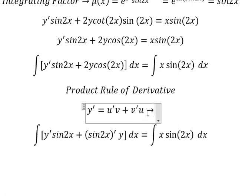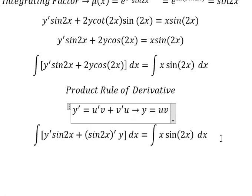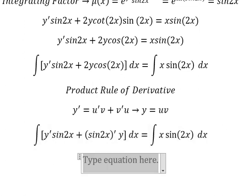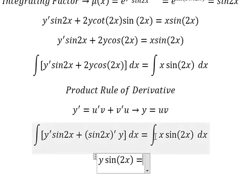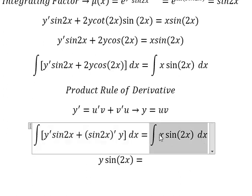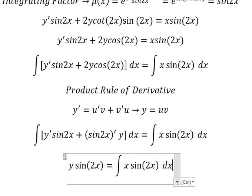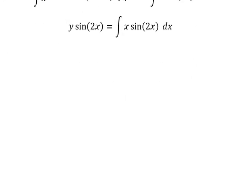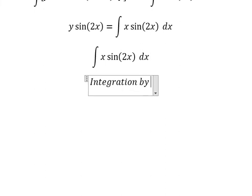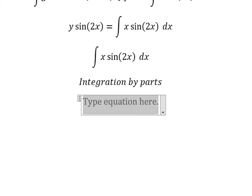So if we do this integration, we have y equals u times v. The integration of this gives us y times sine 2x. Now I will show you the technique of how to find this integration. We can use integration by parts, so we set up u times v.